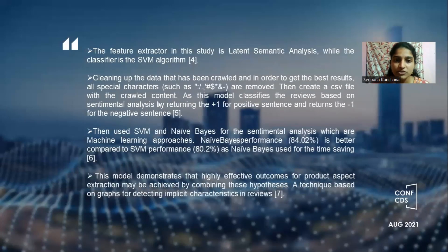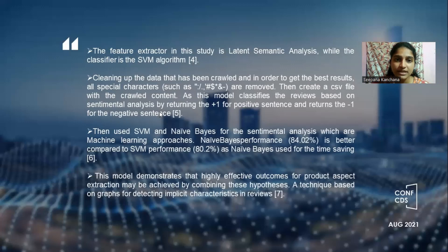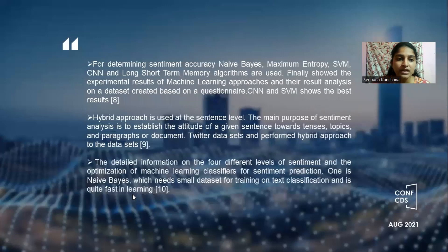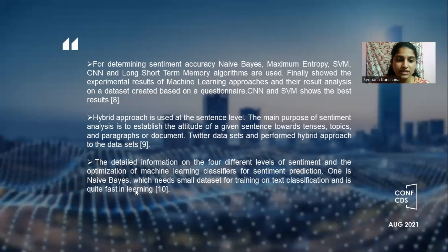The fourth paper mainly focuses on feature extraction — extracting useful features for classification from the data. The fifth paper mainly focuses on cleaning of the data, which is preprocessing — organizing data from unclean to clean form. The sixth paper uses SVM and Naive Bayes and compares these classification techniques. The seventh paper focuses on advanced techniques using graphs for sentiment analysis. The ninth paper mainly focuses on the hybrid approach, which is a combination of lexicon-based analysis and machine learning. The last paper tells how machine learning techniques are far better than traditional techniques.